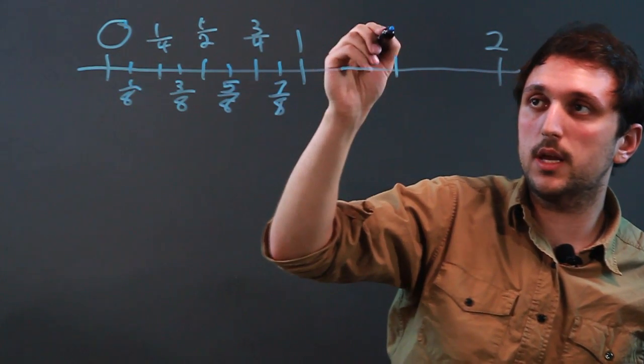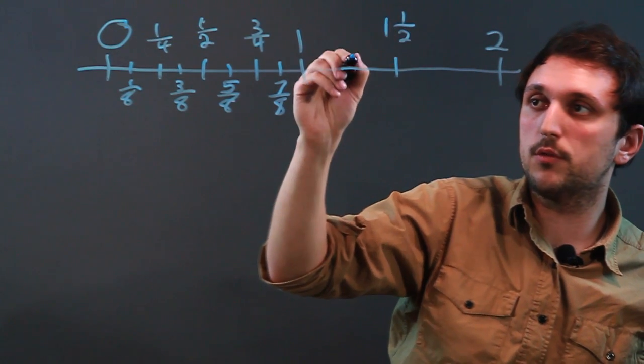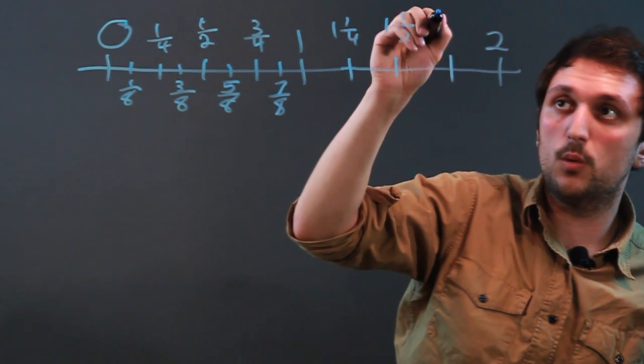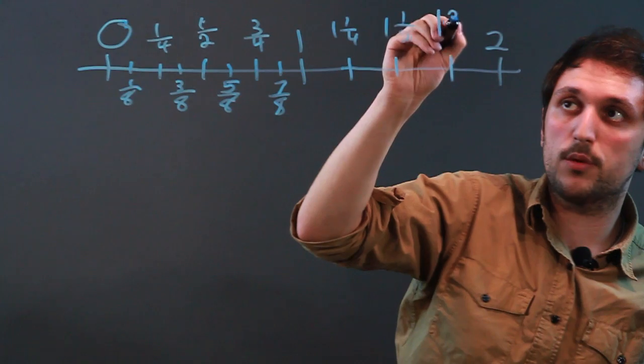And here we'll do it again, one and one half. So, this would be one and one fourth, and this would be one and three fourths.